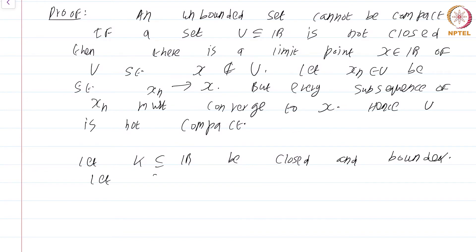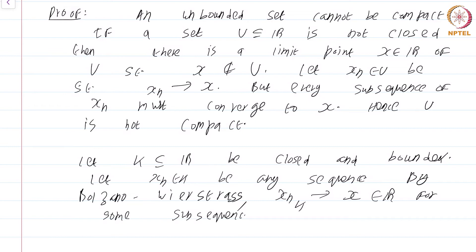We have to show that it is compact and the proof is exactly word for word what we did for a closed interval. Let x_n in K be any sequence. By Bolzano-Weierstrass, x_nk converges to some x in R for some subsequence.